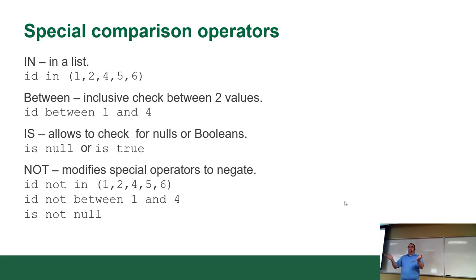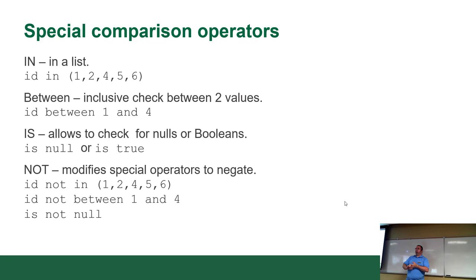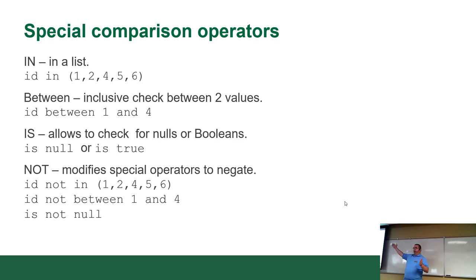You can't do 'equal to true' in MySQL — it won't work. There's also NOT, which negates: 'ID NOT IN (1,2,4,5,6)' gives you everything but those values. 'ID NOT BETWEEN 1 AND 4' returns zero and five and up. And 'IS NOT NULL' means — well, it's not null. I'll be doing demos of this shortly.